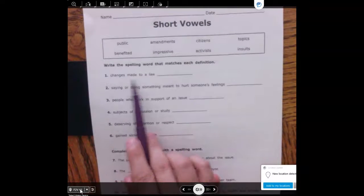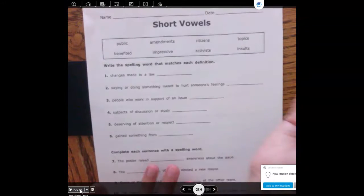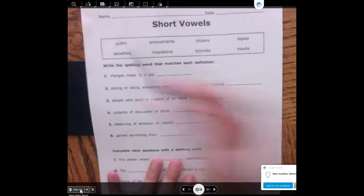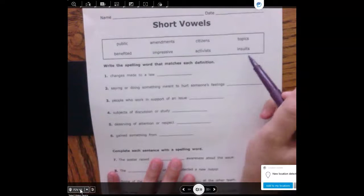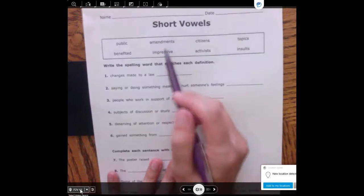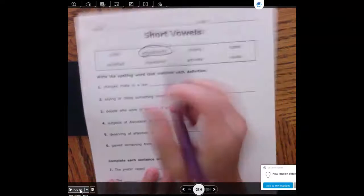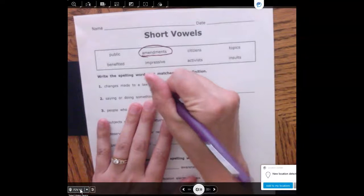Here we go. So changes made to a law. When we make a change to a law, we call that public? No. Do we call that an insult? No. The only word up here that makes sense is the word amendments. So a change to the law is called an amendment.